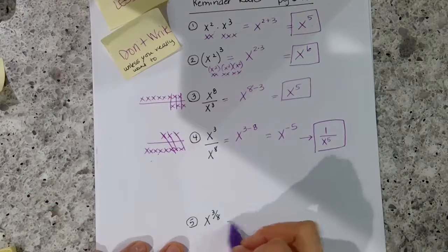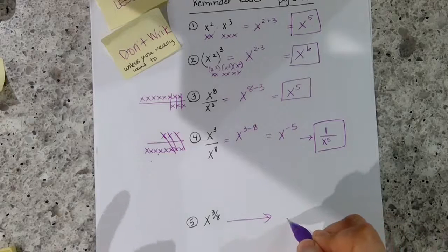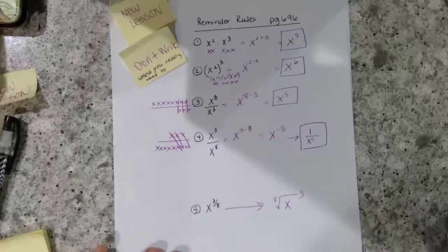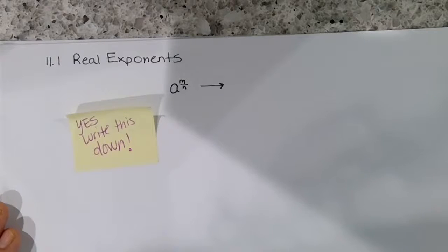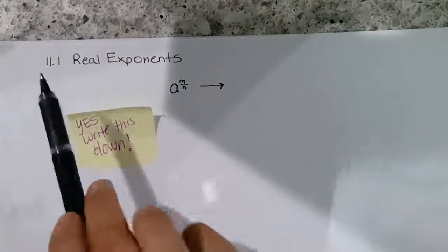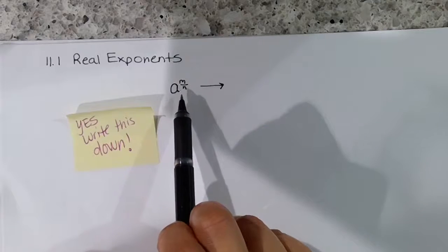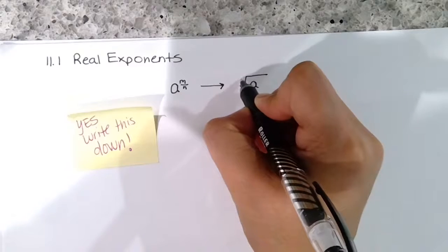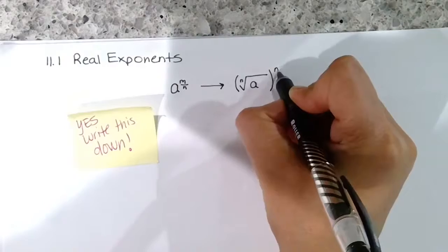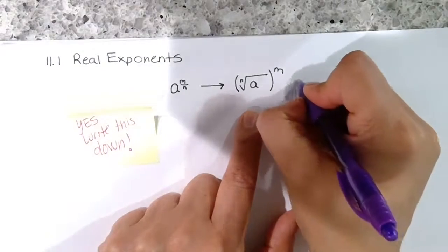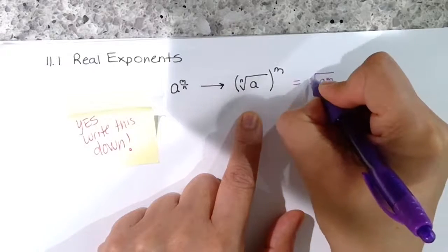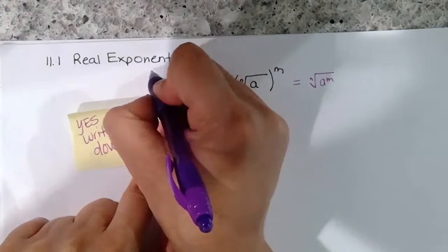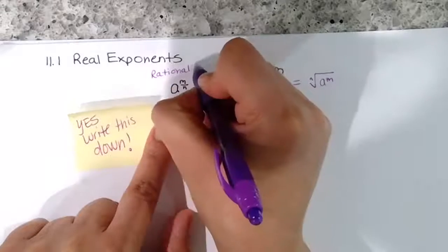The next rule involves x to the three-eighths. Write this down — Section 11.1 on exponents. The rule is: a to the m over n is the same as the nth root of a to the m. You could also write it as take the nth root first and then raise to the m power. These are actually the same, but the first form usually simplifies a bit faster. This is called rational exponents — 'rational' is a fancy word for fraction.